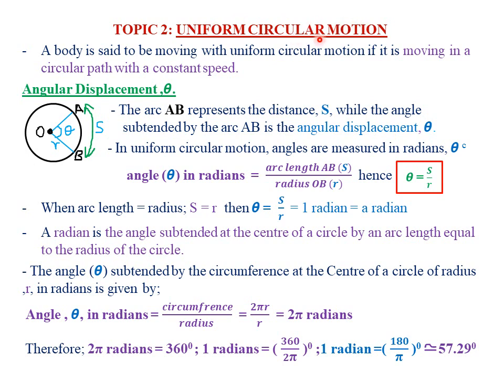Before we discuss Uniform Circular Motion, remember in Form 3, Topic 1, Lesson 1, which was called Linear Motion, we discussed the three types of motions. We talked of Linear Motion, also called Translational Motion. The second type was called Oscillatory Motion, also called Vibrational Motion, which we discussed under the pendulum and also under Waves 1. In this chapter, we'll be looking at the third type of motion, called Circular Motion, also called Rotational Motion.